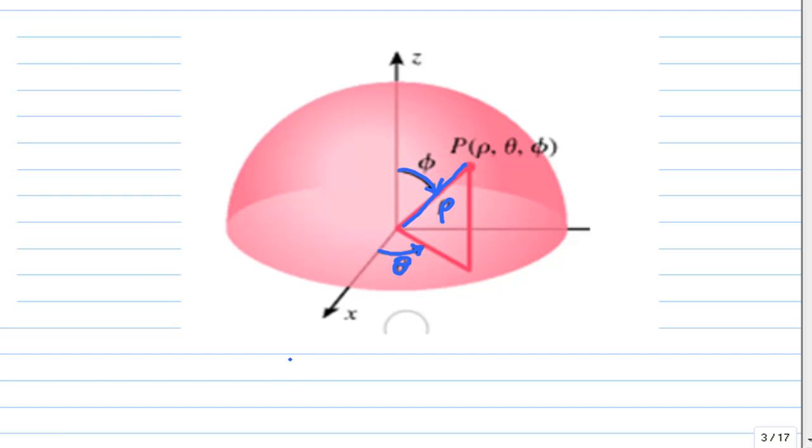For this information, rho is a number greater than zero. Theta can be any number from zero to 2π. And phi is a number from zero to π.